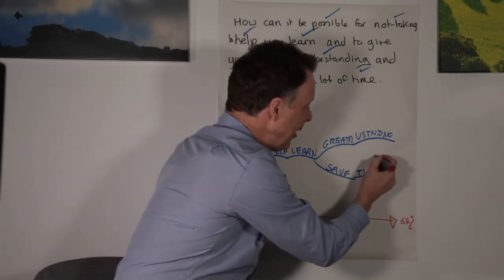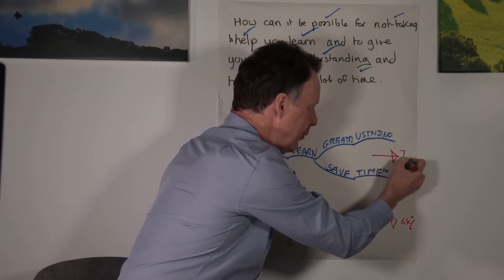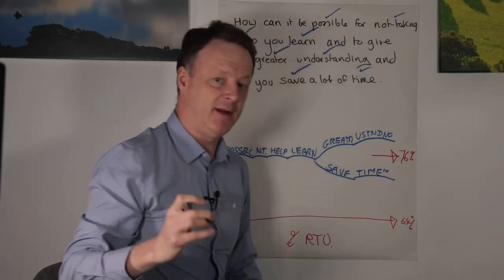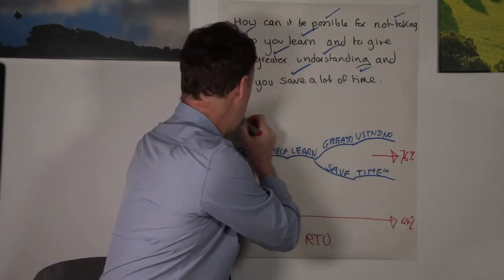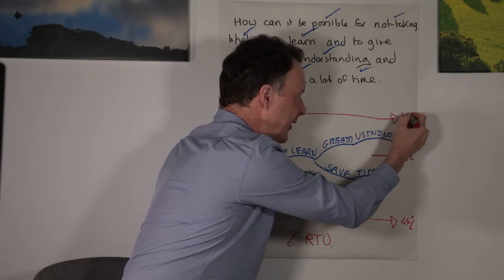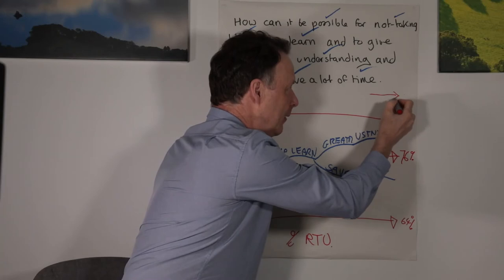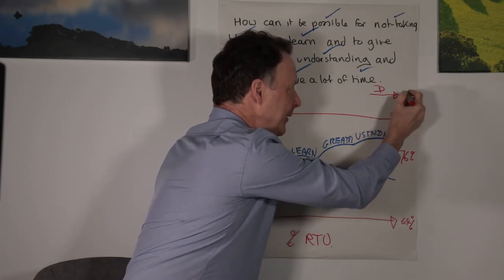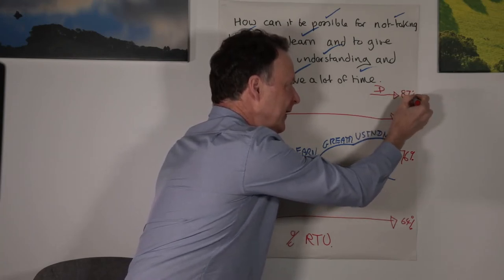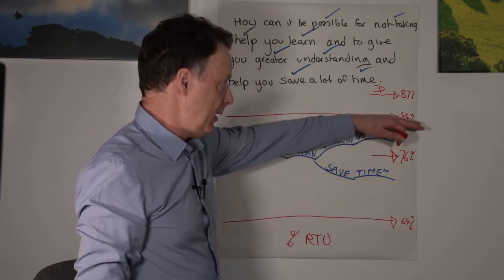As soon as you start making the switch to deep filtering and deep processing, within two weeks, your real-time understanding jumps to 76%. And then after a year, it jumps again to 84%. And if you're dyslexic, which I am, even better news, it jumps even further to 87%.